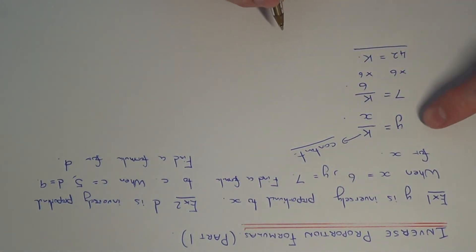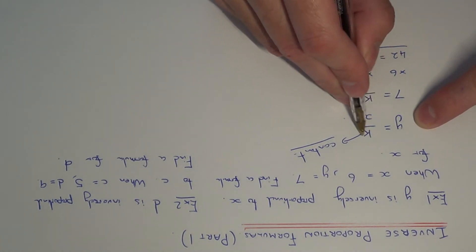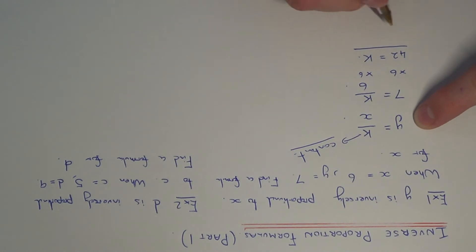So we just need to go back now to our original formula and we just need to change the k to 42. So y will be equal to 42 divided by x. So this is our formula related to this question here.